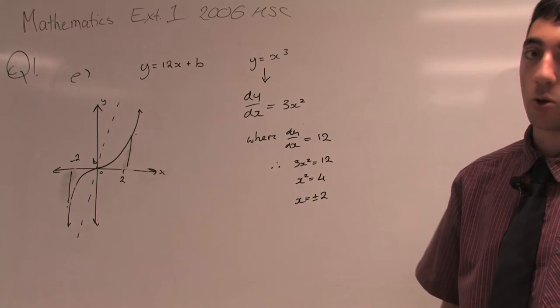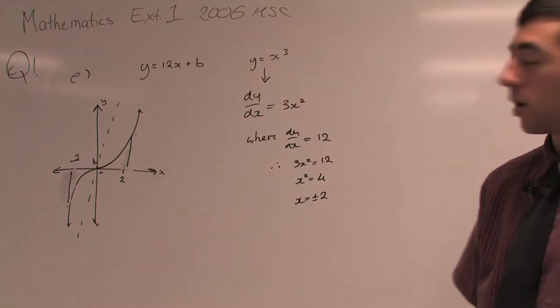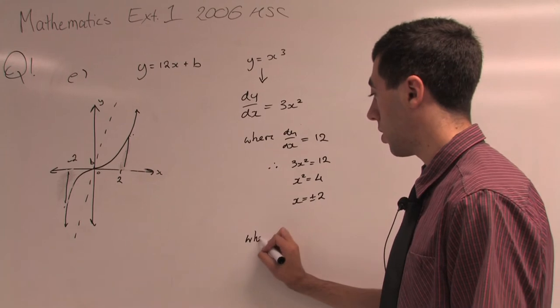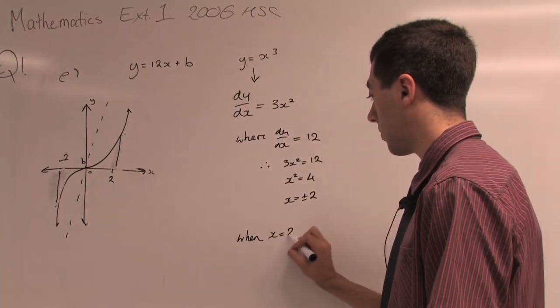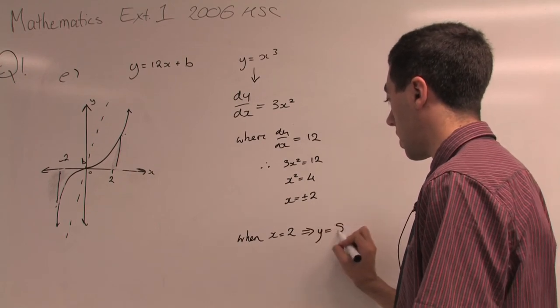Now that we've found our x values, we should also find our y values because that will help us out. We just substitute back into our cubic function. When x = 2, y should be equal to 8.